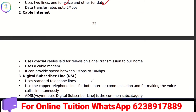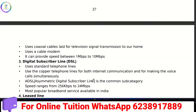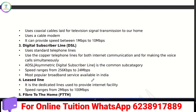If you use cable internet, we use coaxial cable for television signal transmission. Using a cable modem, the speed is between 1 Mbps and 10 Mbps.